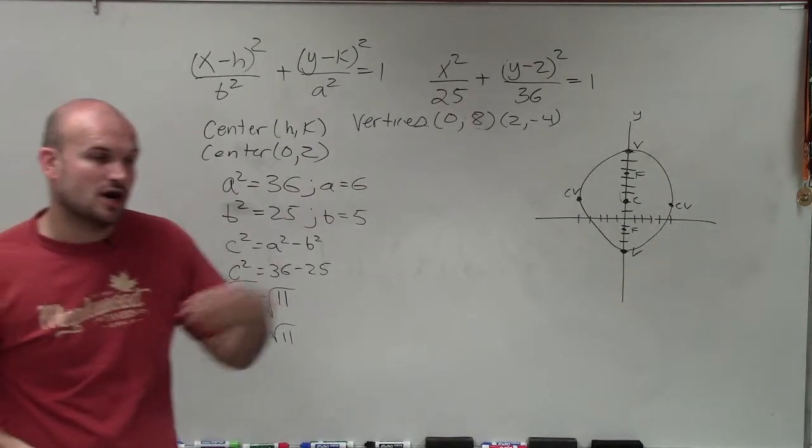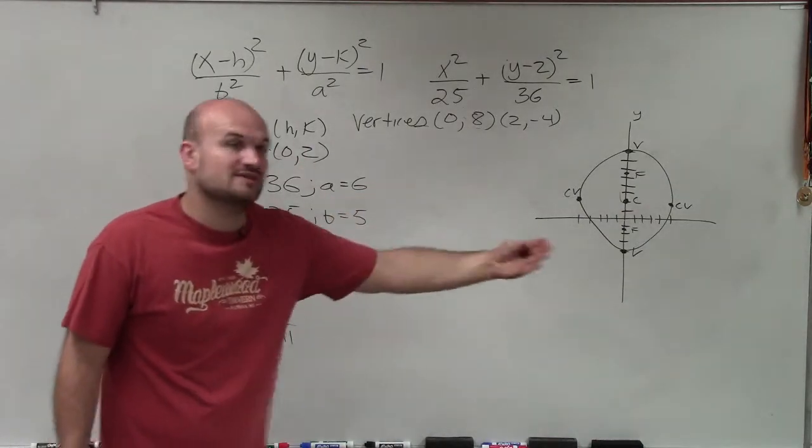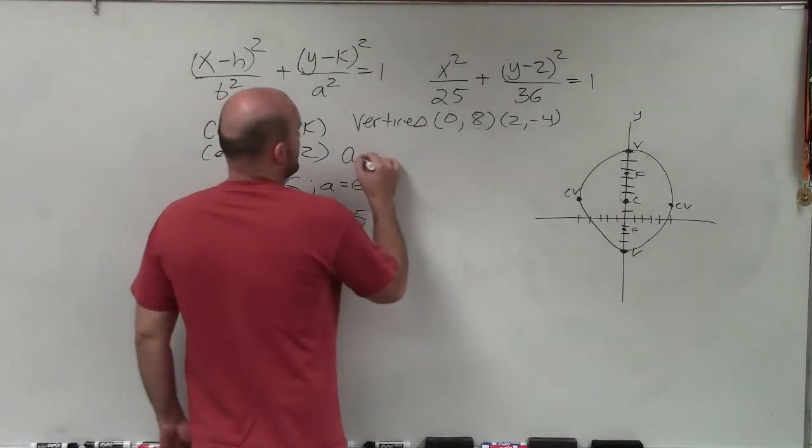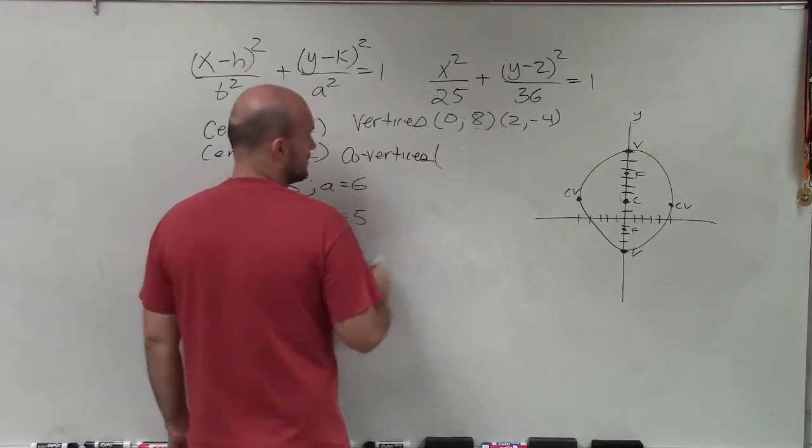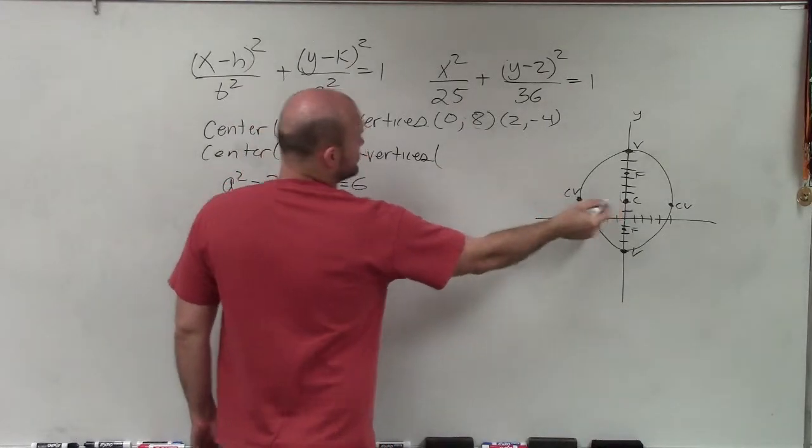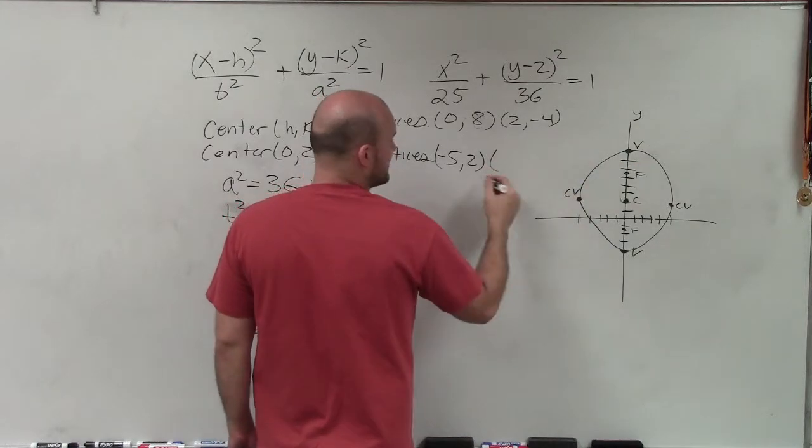Now the two co-vertices have the exact same y coordinate as the center, but now they're just shifted left and right. So my co-vertices are going to be to the left 5, which would be negative 5, 2, and to the right 5, 2.